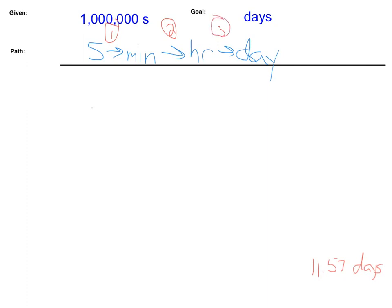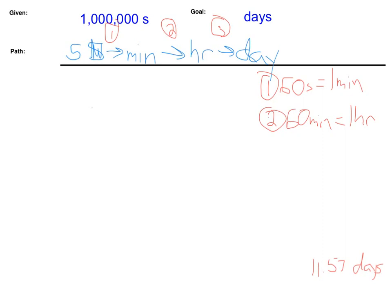Let's go through and start writing those down. First conversion: I need to convert from seconds into minutes, and I know that 60 seconds are equal to one minute. Second conversion: I need to go from minutes to hours, and I know that 60 minutes are equal to one hour. And the last one: I need to convert from hours into days, and I know that there are 24 hours in one day.